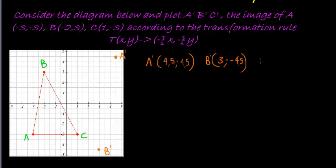Finally, C. C is the coordinate 1 and negative 3, so 1 gets multiplied with negative 3 over 2, which gives me negative 1 and a half. And then negative 3 gives me 4 and a half. So negative 1 and a half and 4 and a half, there's negative 1 and a half, and 4 and a half is up here. There we go, that is coordinate C.